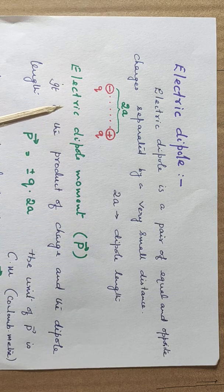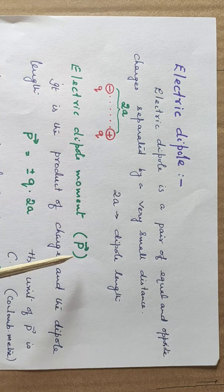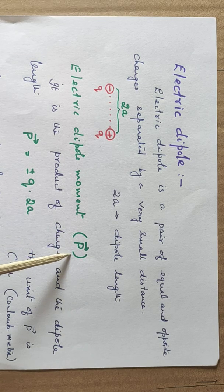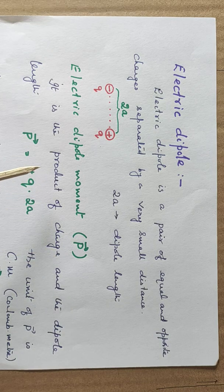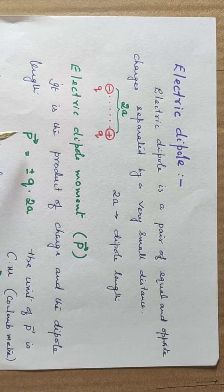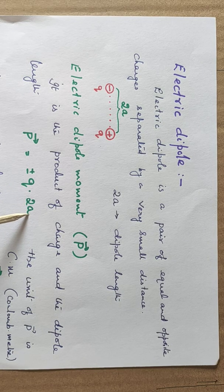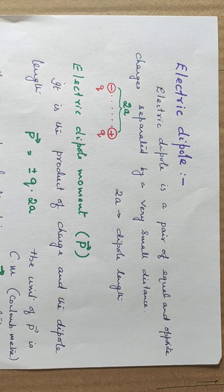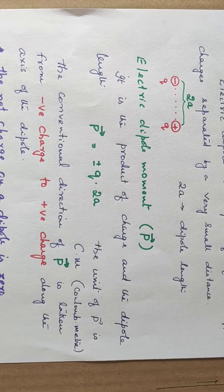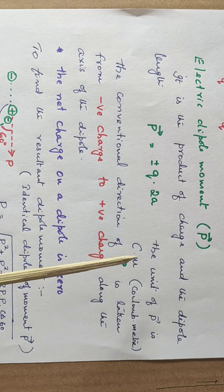Now, anything we discuss about the dipole will be taken in terms of a quantity called electric dipole moment represented by P vector. It is the product of charge and the dipole length, that is P equal to either charge Q multiplied by 2a. And the unit of this dipole moment P is Coulomb meter. Note down. Specifically, the unit of P is Coulomb meter.